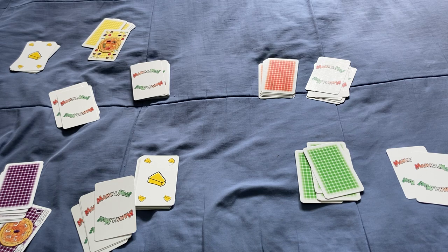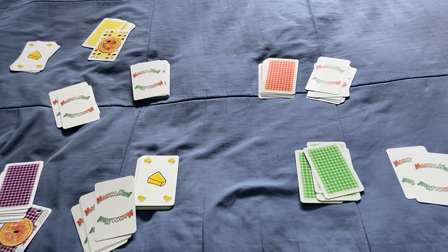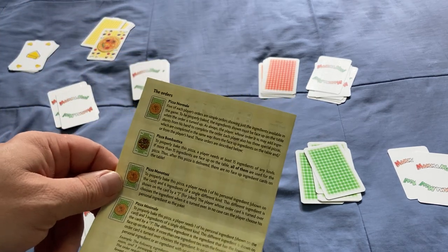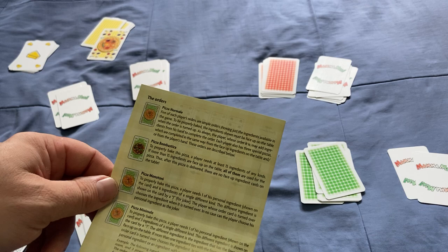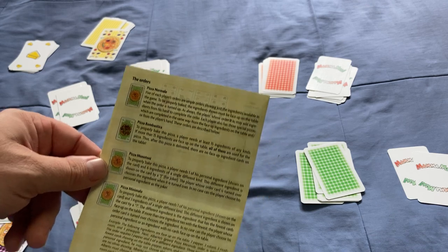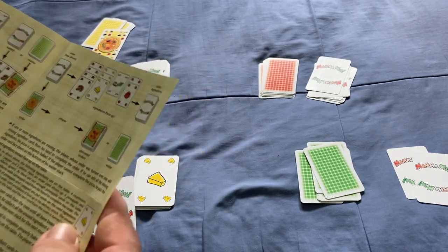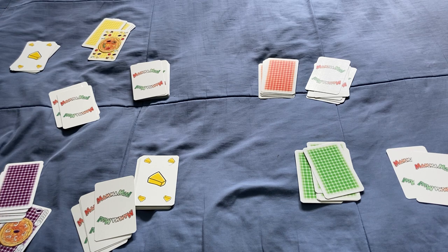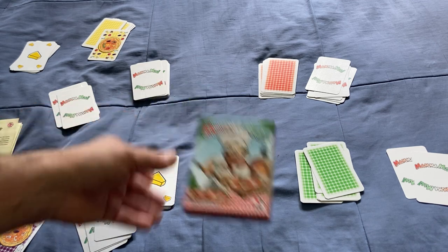Hopefully that all makes sense. And here it talks about the different orders you can do. Pizza Normale, Pizza Bombastica, Pizza Monotone, and Pizza Minimale. Fantastic. I like it. It's a neat little game. Pretty straightforward. Very small box. That's Mamma Mia.